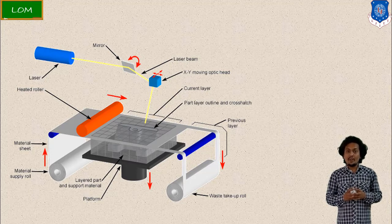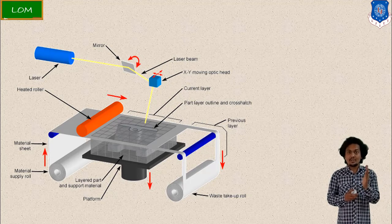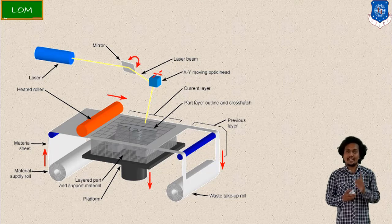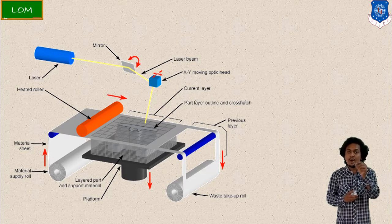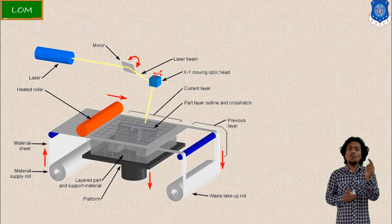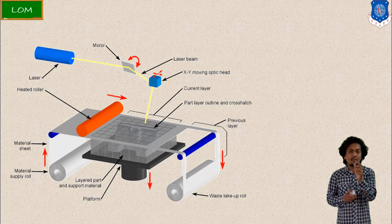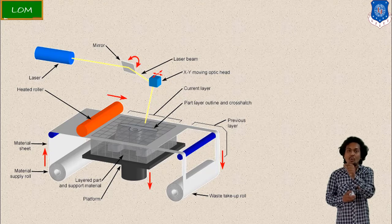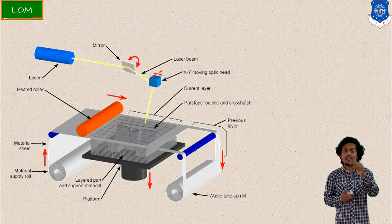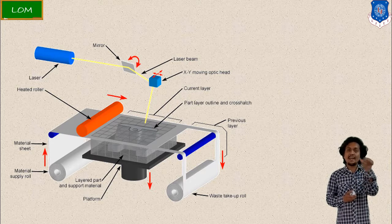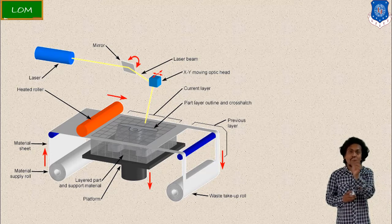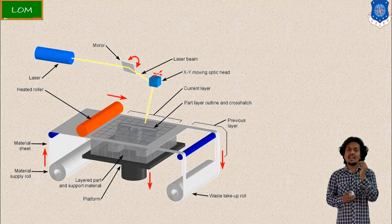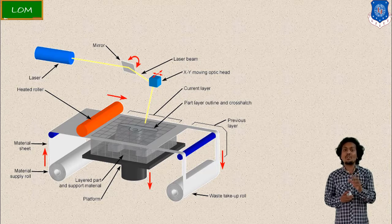First, a roller feeds the sheet material onto the table. After that, the laser is switched on as per the part geometry. The laser moves on the sheet according to the part outline — as per the .stl file geometry. Then the laser moves in a horizontal and vertical hatching pattern at 90 degrees to each other.